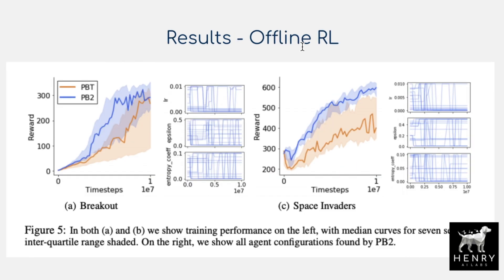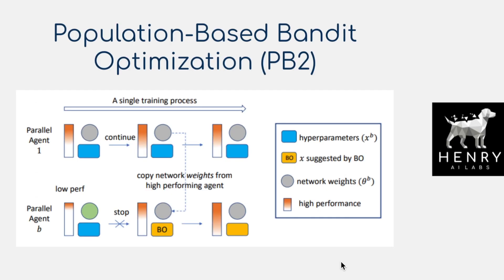In the offline reinforcement learning setting, where we're not collecting trajectories with the current policy, PB2 continues to improve over the original population-based training algorithm across Atari Breakout and Space Invaders. This shows improved performance in both online and offline reinforcement learning control tasks, and it's an important toolkit for robotic learning — making training more efficient without needing large population sizes for hyperparameter tuning.